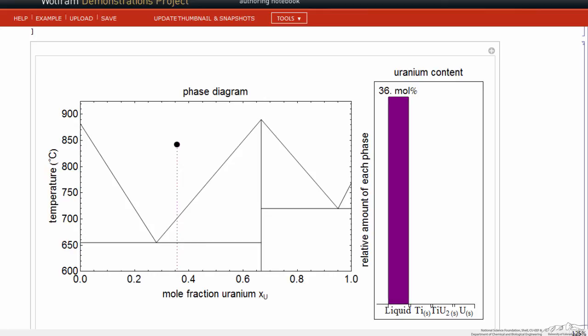If I were to cool this liquid down, I'd reach a point where now I have liquid plus a small amount of the stoichiometric compound. If I continue to cool it, you can see mole fraction of the liquid is 0.31. The mole fraction, of course, of the solid is 0.67. And from the lever rule, we have much more liquid.